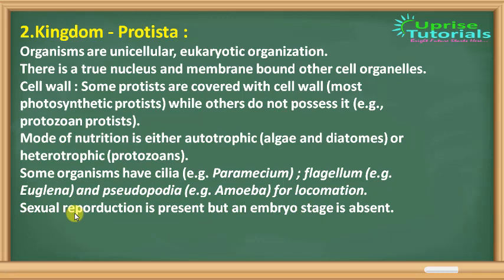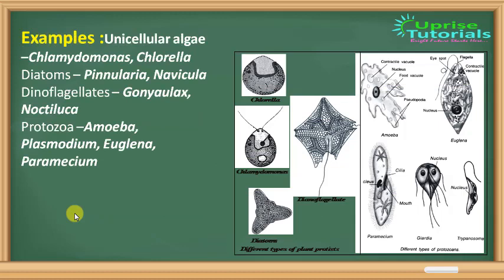Examples of Protista: unicellular algae like Chlamydomonas — you can see the hair-like structure called flagella. This is Euglena, also with a flagella. And Paramecium, which has hair-like structures called cilia covering the whole body used for locomotion. Amoeba moves using pseudopodia. These examples of Protista show organisms with cilia, flagella, and pseudopodia for locomotion.